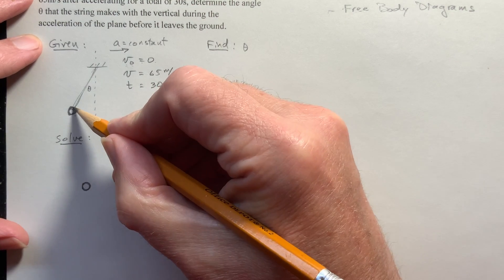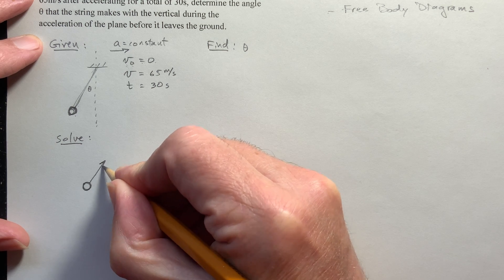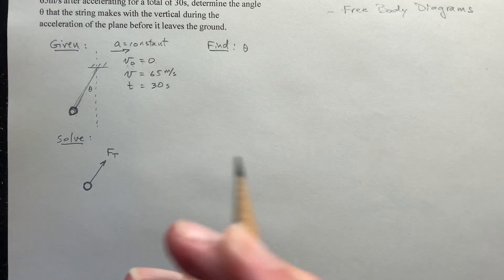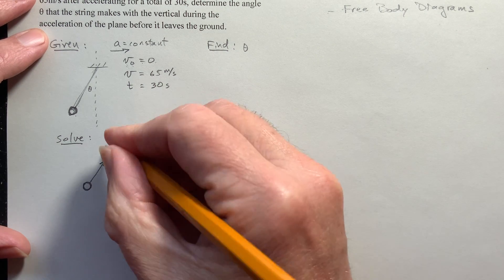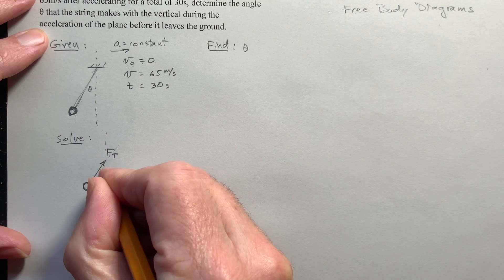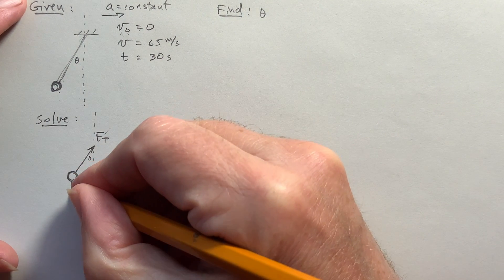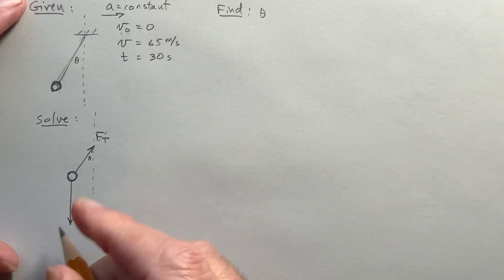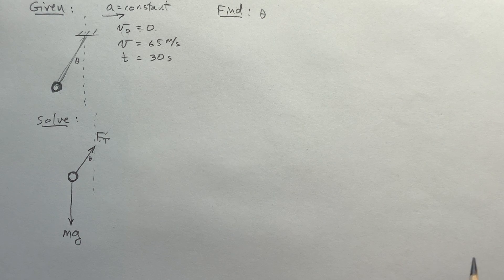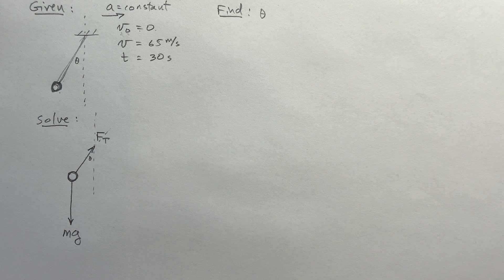And so we know that we're starting from rest. So that means that the initial velocity, the velocity at time equals zero is equal to zero. Okay. And then the final velocity, which I write like this, is 65 meters per second. And of course, that all took 30 seconds to do. And so what we want to find, we want to find that angle theta.